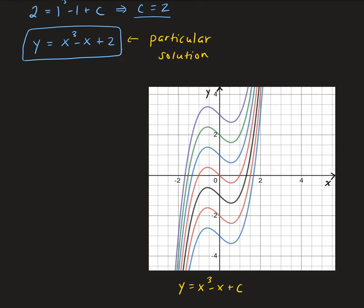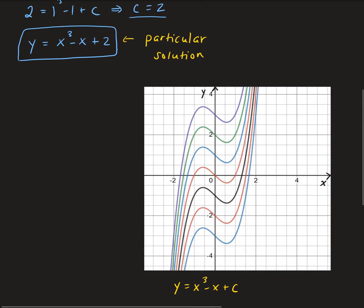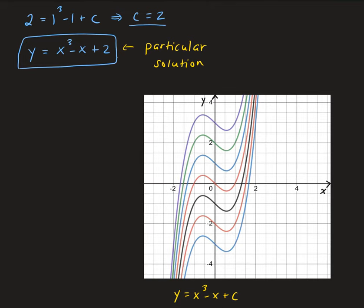The one that we found is going through the coordinate (1, 2), which is right at this point. So that is corresponding to the particular solution that we found. In other words, that's x cubed minus x plus 2. So again, that's just x cubed minus x shifted up 2 units.